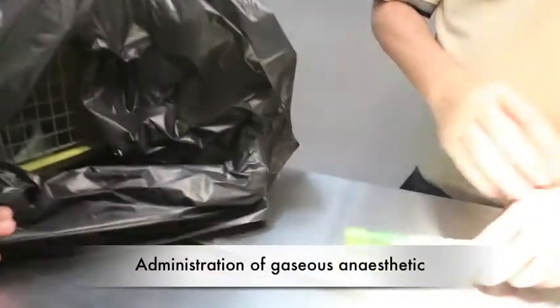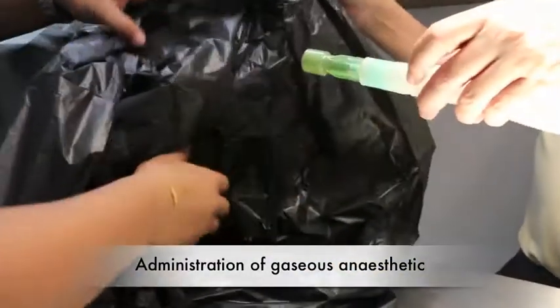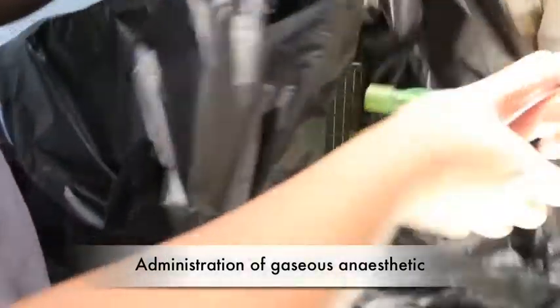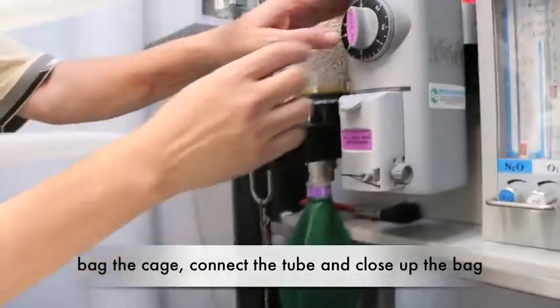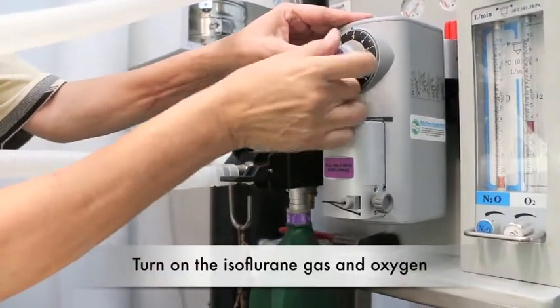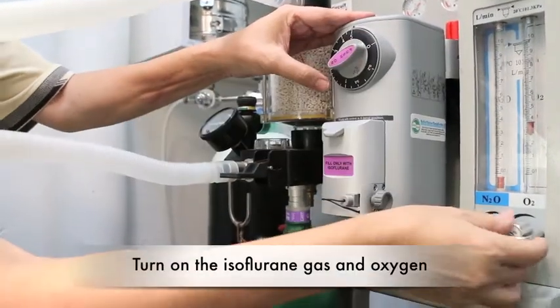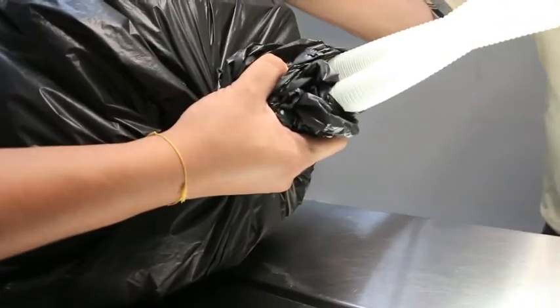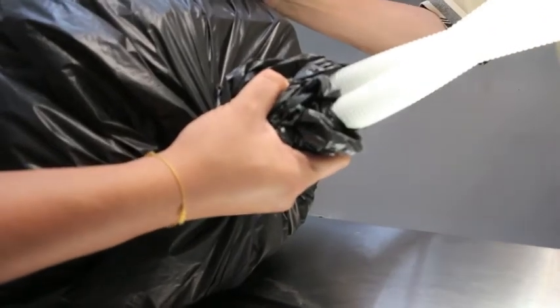Ready... no, so just to connect to the... we'll close up the black. This is another method. So we'll switch on the isoflurane gas for oxygen, 5% flow, and this method, the gas will go in to anesthetize the cat.